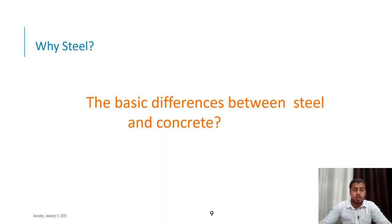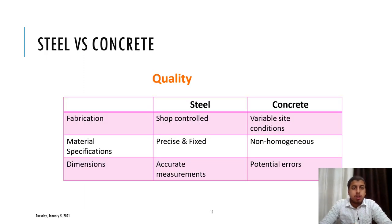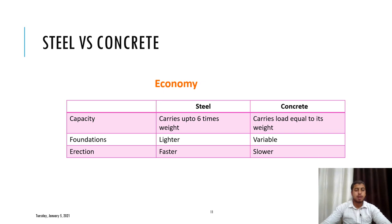Why steel? The basic differences between steel and concrete: in terms of quality, steel is factory-controlled giving more consistent behavior, while concrete has variable behavior because it is site-controlled. In terms of material specifications, steel is more precise and gives fixed values while concrete gives non-homogeneous values. For dimensions, steel gives accurate measurements but concrete has potential errors. In terms of economy and capacity, steel carries up to 6 times its own weight but concrete carries load equal to its weight only. Steel buildings require lighter foundations, while for concrete it varies with type of loading.